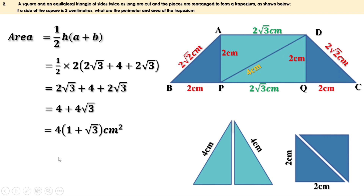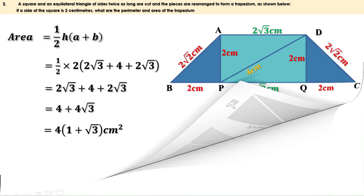Therefore the area of this trapezium is 4 into (1 plus root 3) square centimeters. If you need the approximate value, you can substitute the value of root 3 here. Next problem.